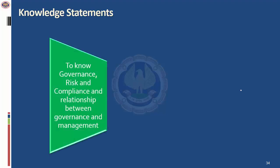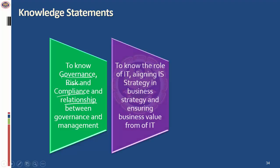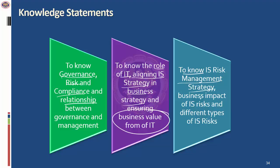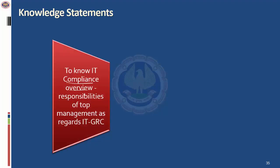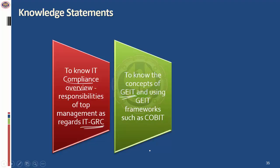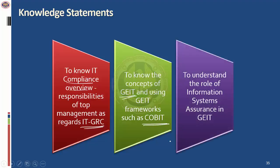Let's look at the knowledge statement. Based on the learning objectives, task statements are formulated; based on task statements, you need certain knowledge. To distinguish various types of governance and management, you need to know what is governance, what is risk, what is compliance, what is management, and the relationship between them. You should also know the role of IT, how to align IS strategy with business strategy to achieve business value. You need to know the various types of risk management strategies, the impact of IS risk and different types of IS risk. You also need to know what IT compliance is, the responsibility of top management pertaining to IT GRC, the concepts of GEIT, how to use frameworks such as COBIT, and the role of information systems in the area of GEIT.